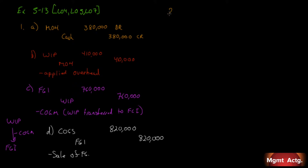The first thing we need to do is figure out what's left in manufacturing overhead. Manufacturing overhead has a credit balance of $30,000. We incurred $380,000 but applied $410,000 — so we applied too much. That $30,000 credit balance is over-applied. When it's over-applied, the proper way to close it out is in proportion to where that $30,000 is sitting among the inventory accounts.